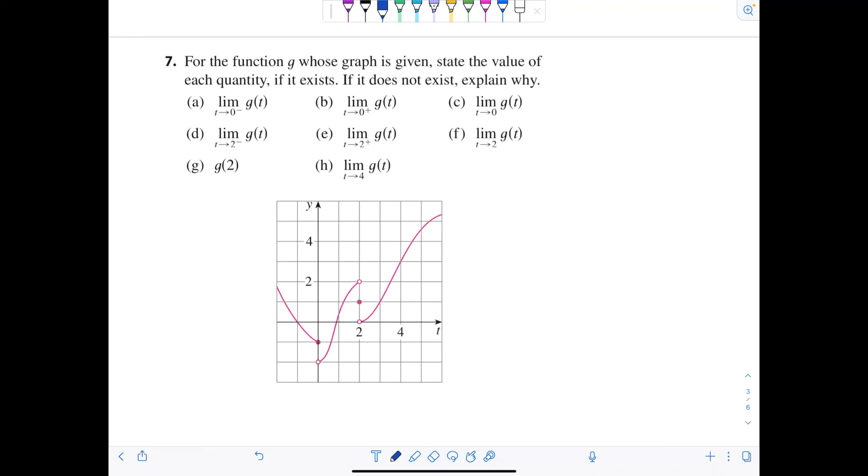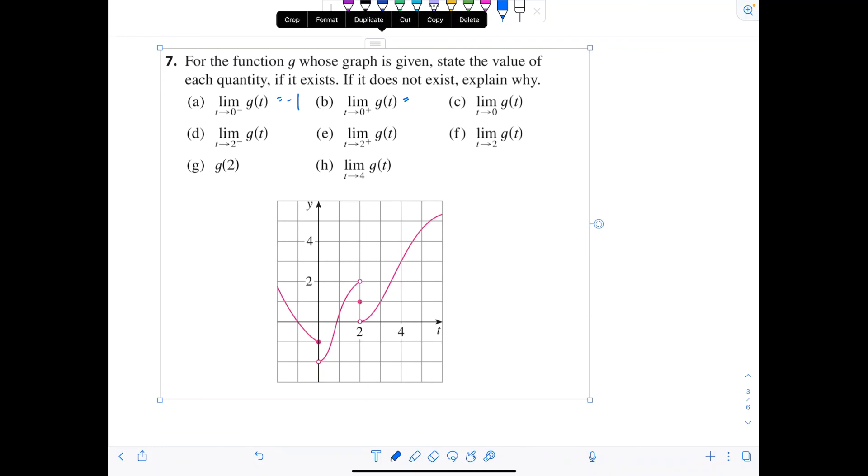First one. Limit as t approaches 0 from the left of, this is g of t, this function here. 0 from the left. So you always got to find, okay, here's my t axis. Here's where t equals 0, but we're coming from the left. So we're coming this way. What's the limit? The graph is tending towards negative 1. Now we got to check from the right. Okay. So we're coming this way. The graph is tending towards negative 2. Stay there. Negative 2.